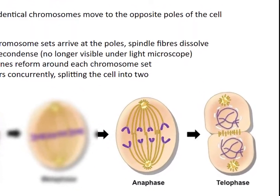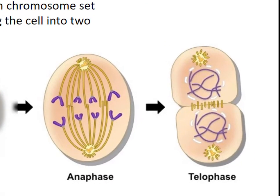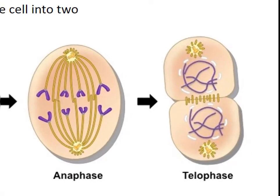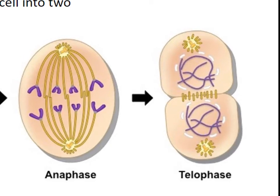Lastly, we have telophase. As the spindle fibers finish reeling in the chromosomes and the two chromosome sets arrive at the poles, spindle fibers dissolve. The chromosomes decondense and are no longer visible under a light microscope. The nuclear membranes reform around each chromosome set, creating two identical nuclei. Cytokinesis occurs concurrently, splitting the cell into two.